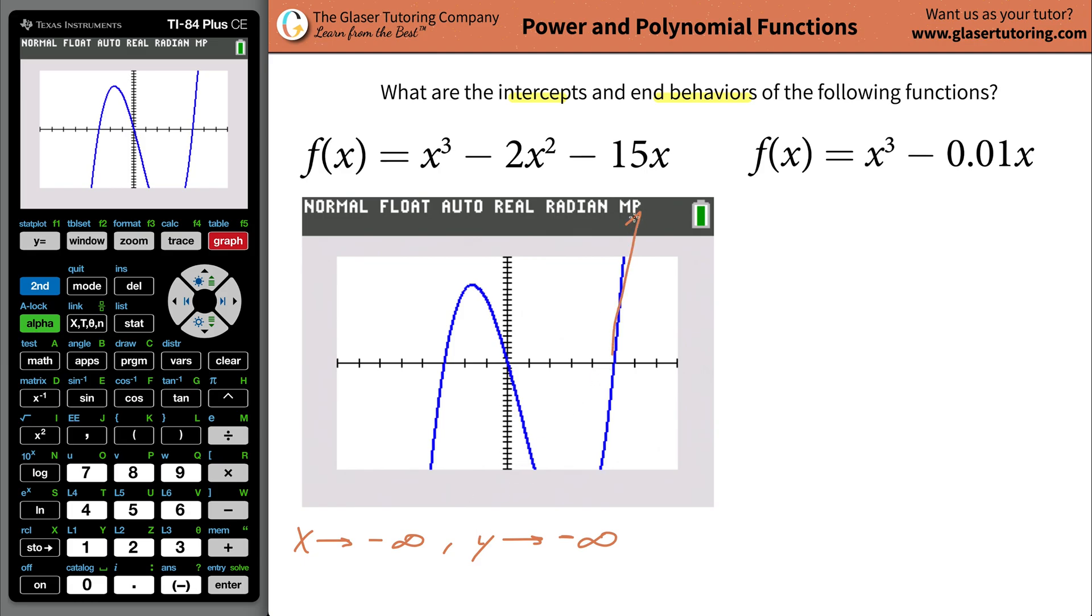And then if we go to the right side now, it's going to go on and on and on forever in this direction. So as x gets larger and larger in the positive direction, meaning as x goes to positive infinity, the y value then will go to also positive infinity. And that's what the end behavior is. That's all it is, fairly straightforward.